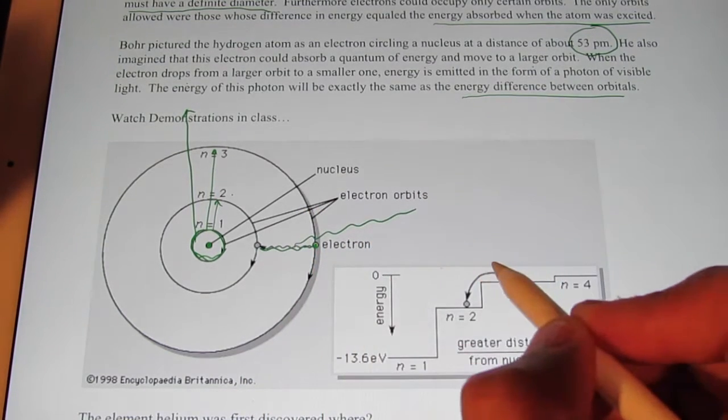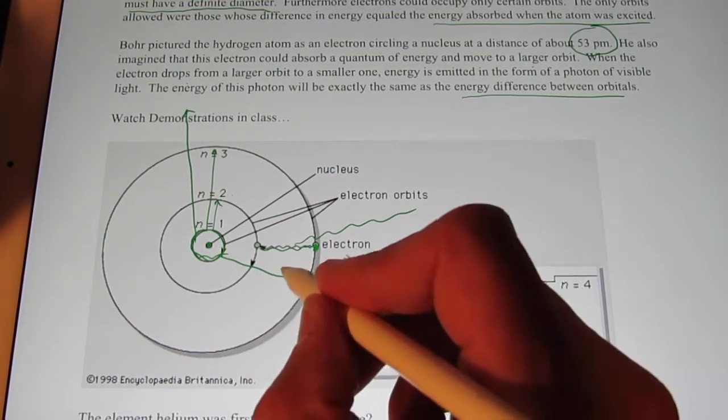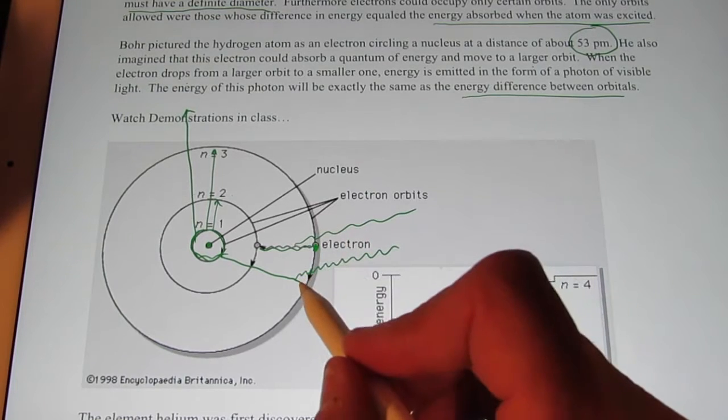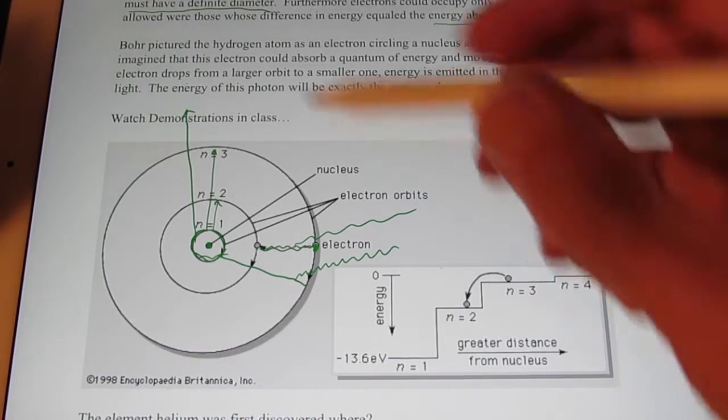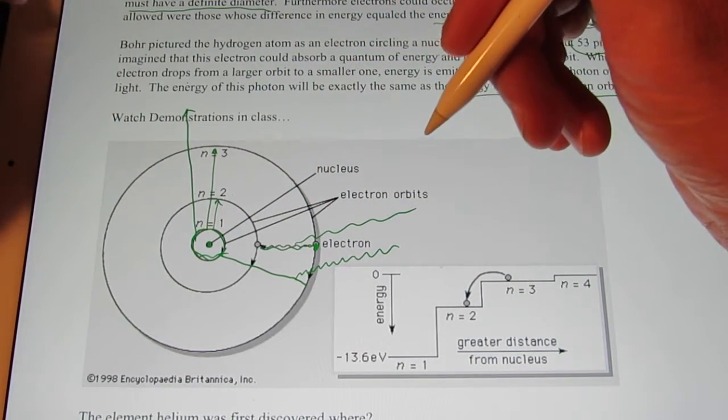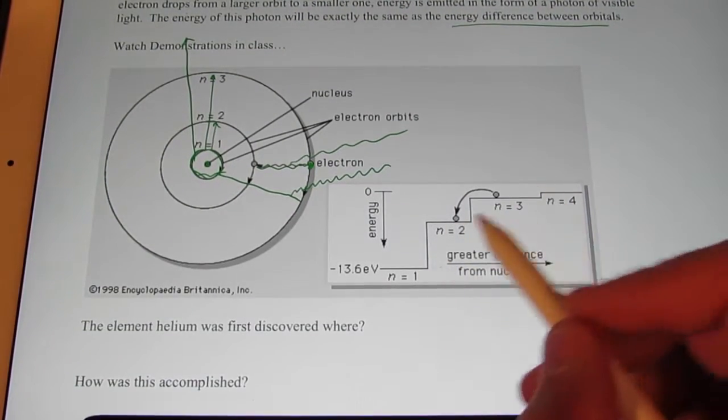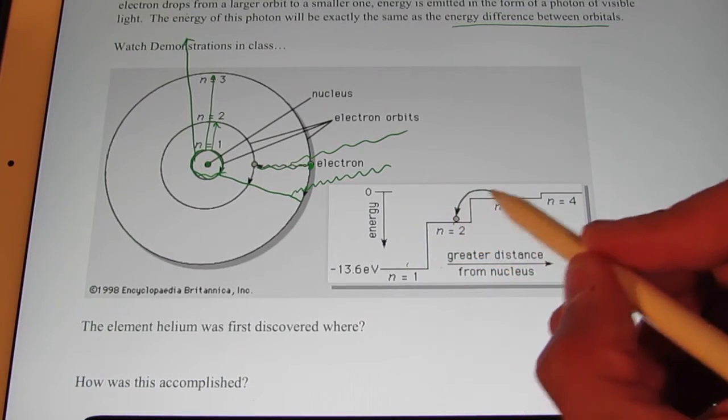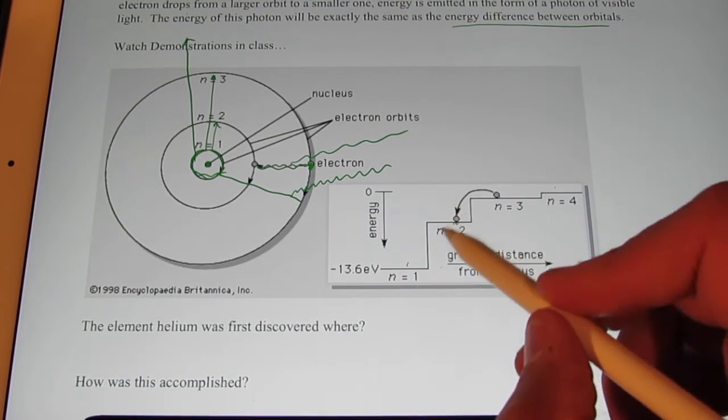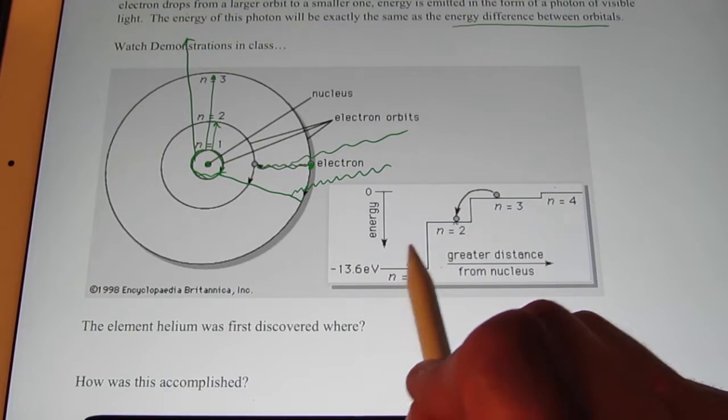If it falls from the third energy level all the way down to the first energy level, won't it give off a photon that has a higher frequency or smaller wavelength because the energy difference is greater? And Bohr was able to calculate the energy differences between the different energy levels or orbitals of the electron and the hydrogen atom. So, we can liken that to maybe some stairs. If a ball is moved up some stairs, it takes energy. Then, when that ball rolls down those stairs, it gives off energy. The amount of energy given off is equal to the amount of energy that was required to move it up.